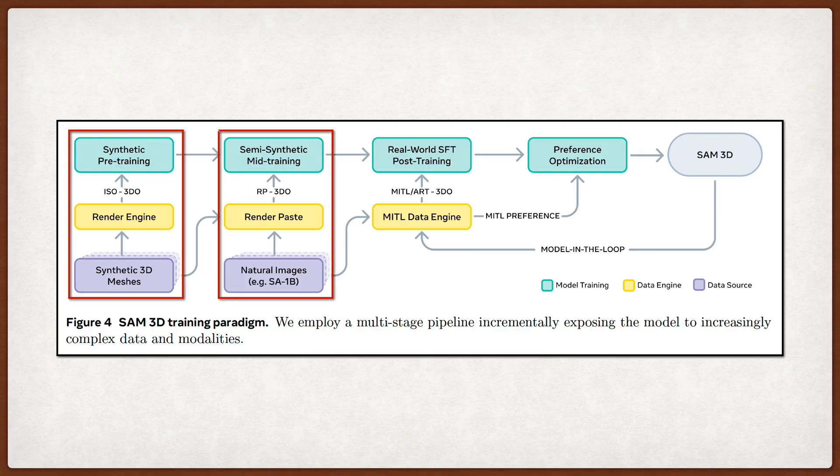Then they move to what they call mid-training, which is really cool because they use a technique called render and paste, or ARP3DO. They take those synthetic 3D models and paste them into natural images, using depth maps to handle occlusion, which forces the model to learn how to reconstruct objects that are partially hidden or in cluttered scenes without needing expensive real-world annotations yet.